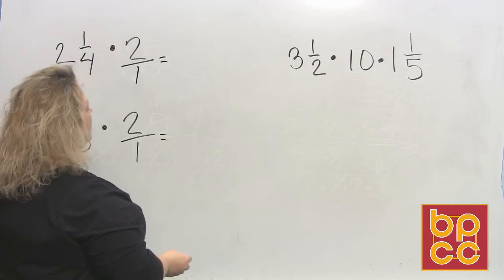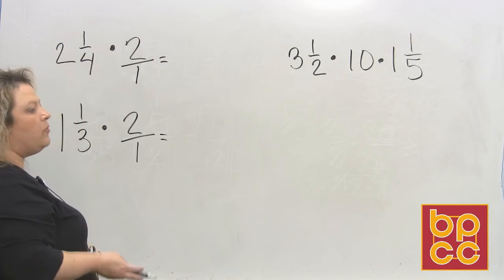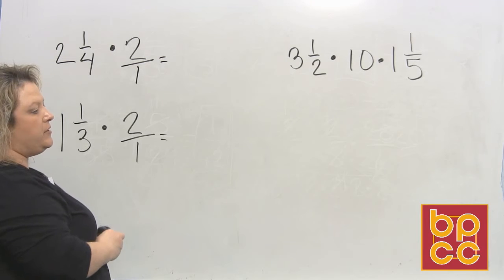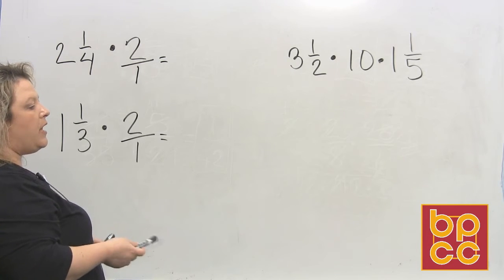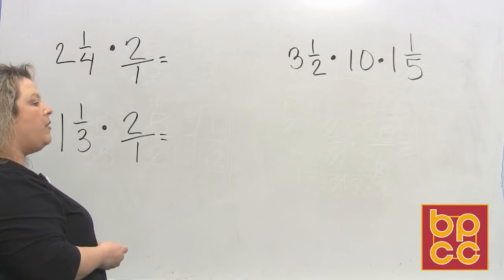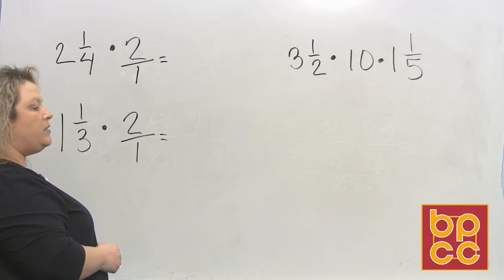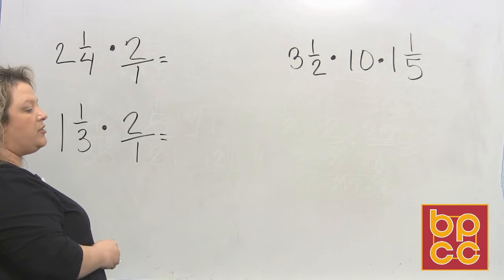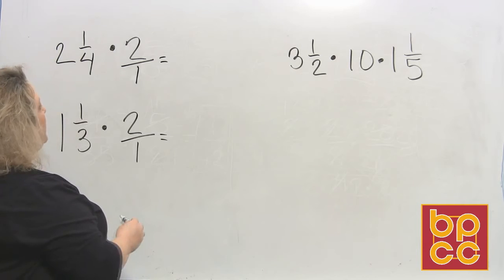And the next thing that you want to do is we did a rule earlier when we were introduced to fractions and mixed numbers where we took a mixed number and changed it to an improper fraction. Anytime you're going to multiply or divide, you always want to make sure that you change your mixed numbers to improper fractions before you do this. It makes it a whole lot easier.